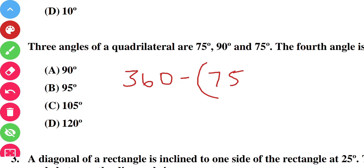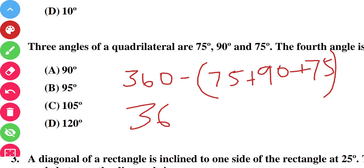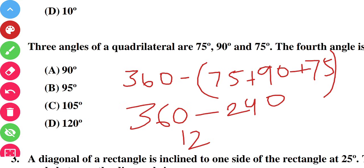75 plus 90 plus 75 equals 240. So 360 minus 240 = 120 degrees. The fourth angle is 120 degrees — option D is correct.